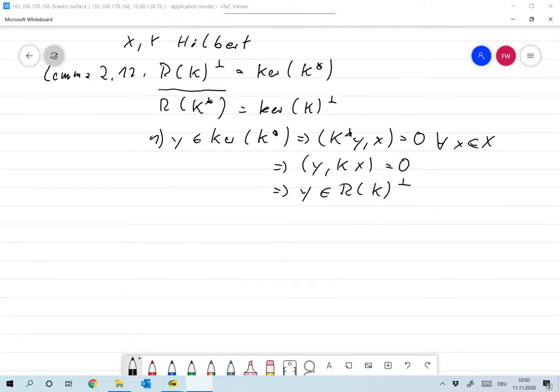let's assume that y is in range of K perp. Then we have that in particular, y is the scalar product of y with any element of the range of K is 0, so particularly for this one.